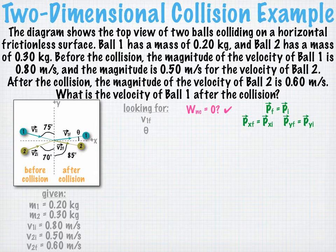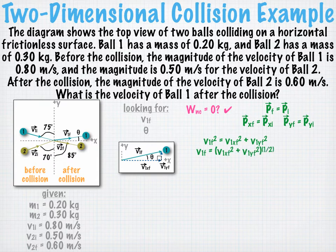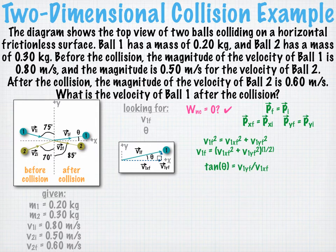To find an equation for the magnitude of v1 final, let's take a close look at that vector. The velocity vector has an x component and a y component. We can find the magnitude of the v1 final vector by using the Pythagorean theorem once we know the magnitudes of v1x final and v1y final. And to find our other unknown theta, we can use trigonometry. The tangent of theta equals the magnitude of v1y final over the magnitude of v1x final. Solving for theta gives us this equation.